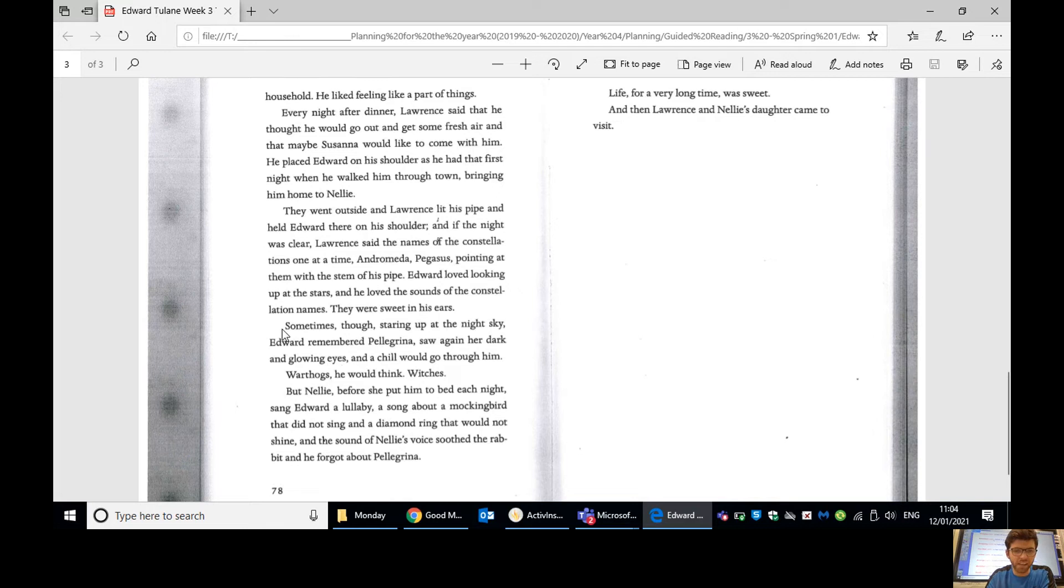Edward loved looking up at the stars, and he loved the sound of the constellation names. They were sweet in his ears. Sometimes, though, staring up at the night sky, Edward remembered Pellegrina. Saw again her dark and glowing eyes, and a chill would go through him. Warthogs, he would think. Witches. But Nellie, before she put him to bed each night, sang Edward a lullaby. A song about a mockingbird that did not sing, and a diamond ring that would not shine. And the sound of Nellie's voice soothed, so calmed the rabbit, and he forgot about Pellegrina. Life, for a very long time, was sweet. And then Lawrence and Nellie's daughter came to visit.